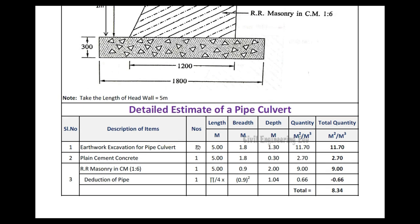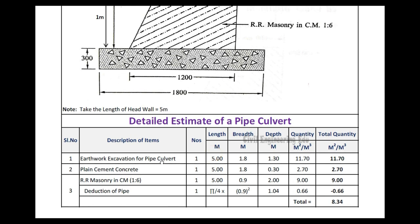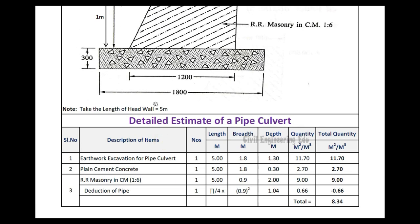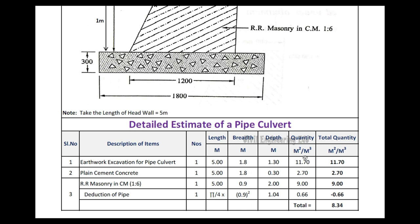For all three items, numbers will be 1 and length will be 5 meters — this is common for all. For earthwork excavation, length is 5 meters, breadth is the PCC dimension of 1.8 meters, and depth is calculated from ground level to bottom of PCC: 1 meter plus 0.3 meters equals 1.3 meters. Multiplying these gives the excavation quantity.